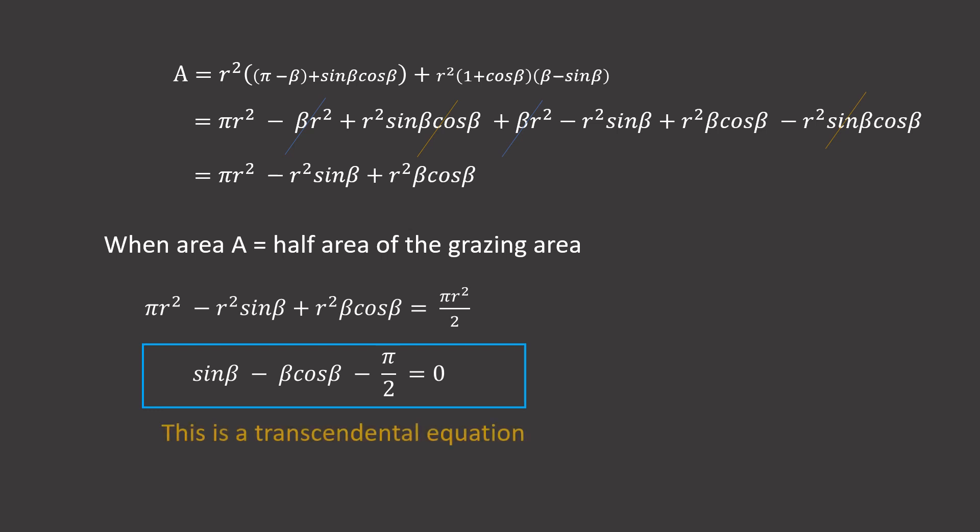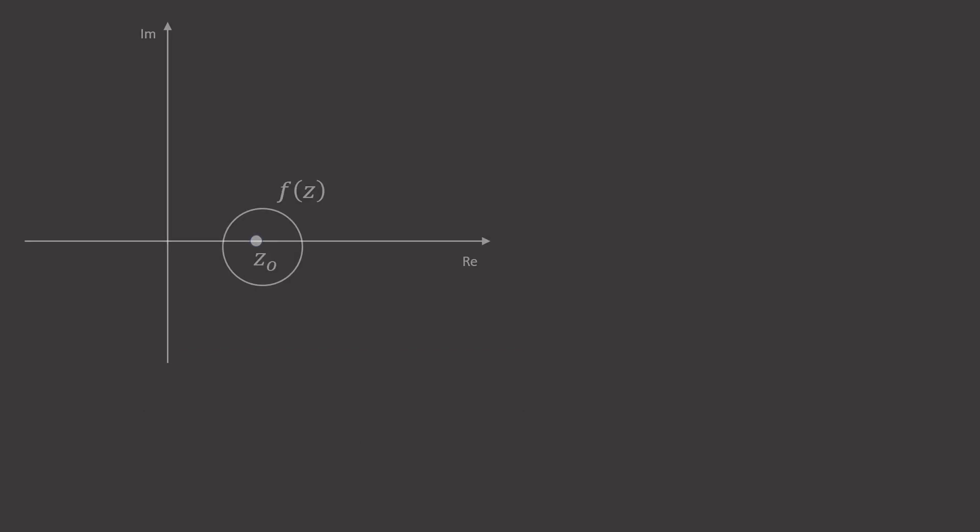This is a transcendental function. It means it doesn't have a closed-form solution. It can't be solved using the analytical tools that we have. It's a hard problem to solve analytically, but we can solve it using numerical methods or graphical methods by plotting the graph of β cos β - π/2 and sin β, and finding the point where they intersect.